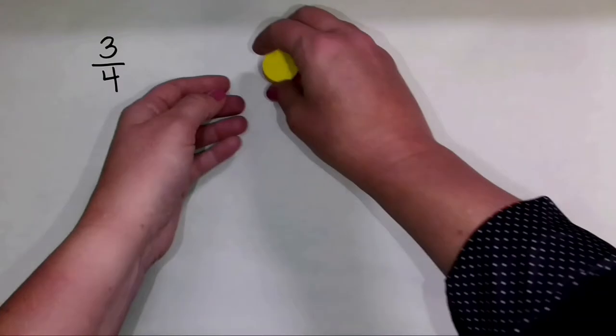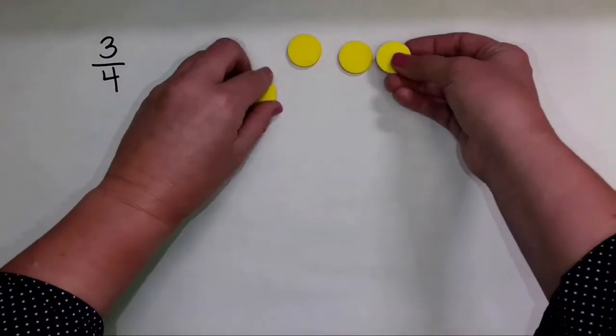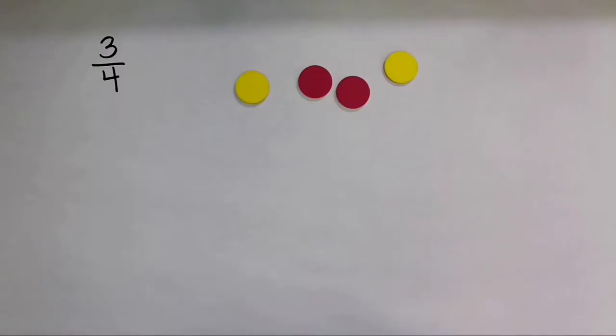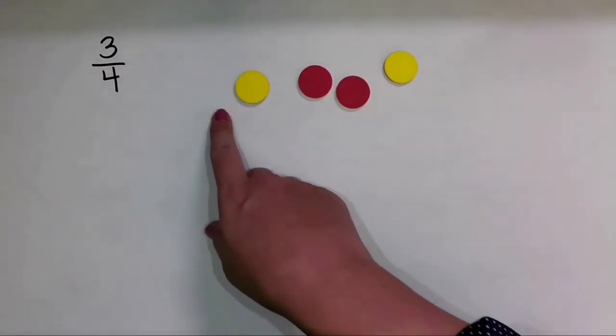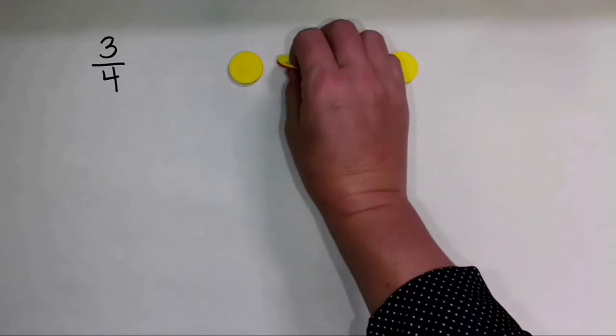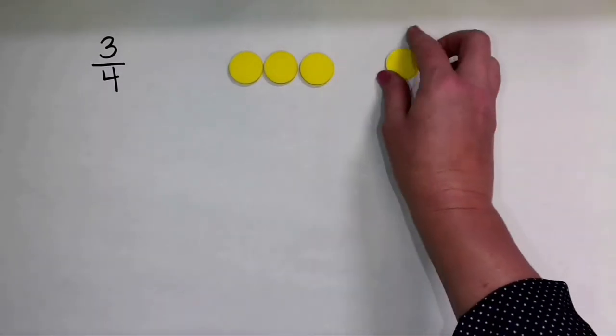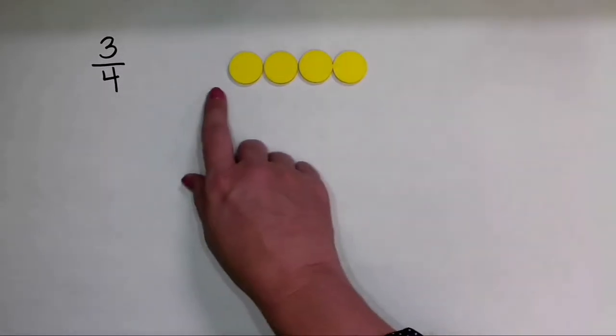So for example, I can use these two color counters. They're called two color counters because there are two colored sides. So here if I want to show the fraction 3/4, first I'm going to show a set with four equal parts, because my denominator is 4.